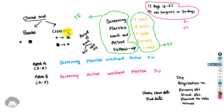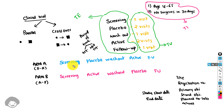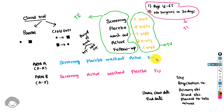In a crossover trial with two arms, arm A and arm B, subjects assigned to arm A receive placebo first and then active afterwards. The sequence of elements for subjects in arm A is: they undergo screening, then take placebo, followed by a washout period — the specific time during which placebo is washed out of the body — and then receive active treatment, followed by follow-up.